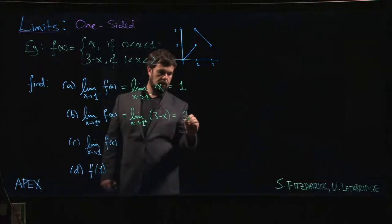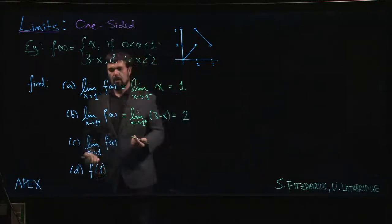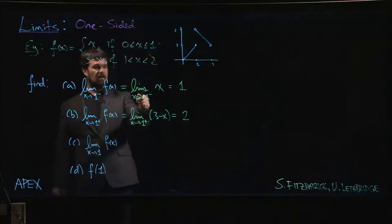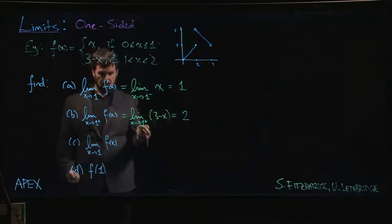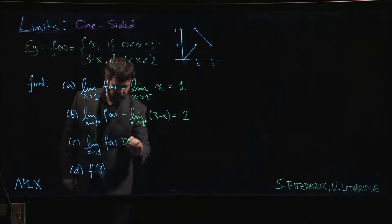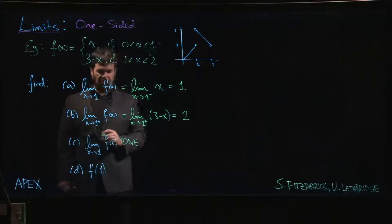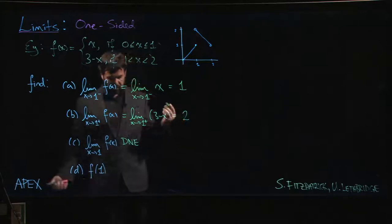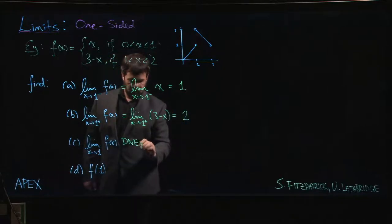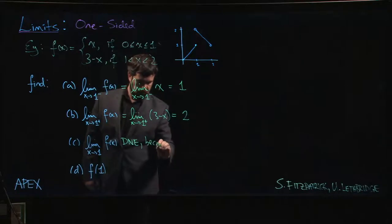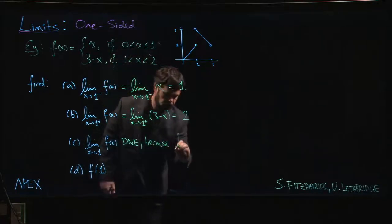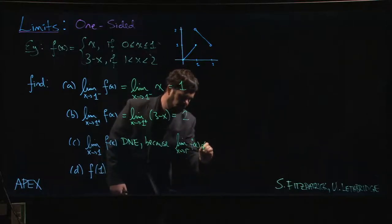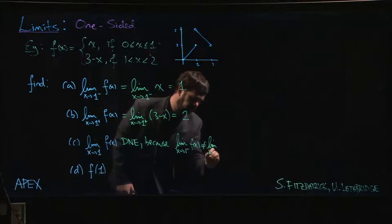So when we come down to part C that says what's the limit as x approaches one, well we've just seen that the left and right hand limits are not equal, so we can simply say that this limit does not exist. Now maybe you shouldn't just say does not exist.